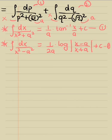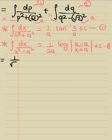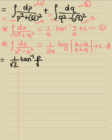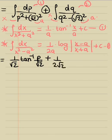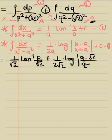Applying the formulas: the solution is (1/√2) tan⁻¹(p/√2) plus (1/2√2) log|(q − √2)/(q + √2)| + C. Now we substitute back: p = m − 1/m and q = m + 1/m.